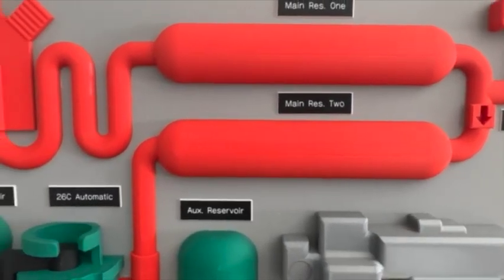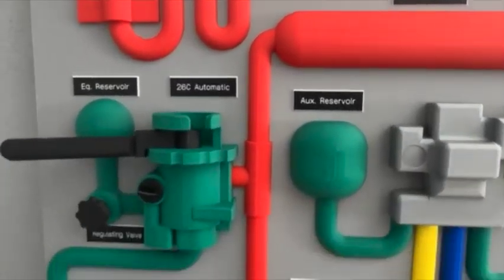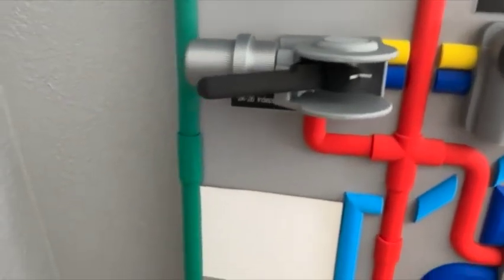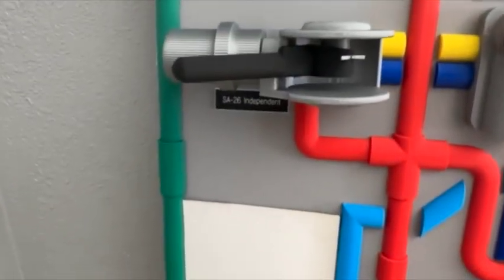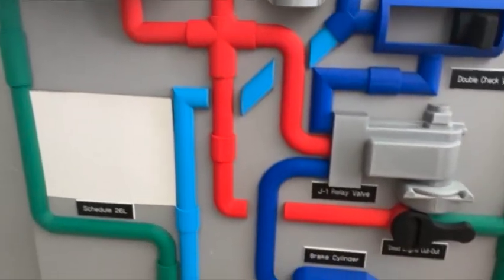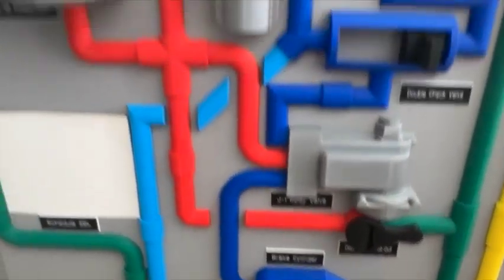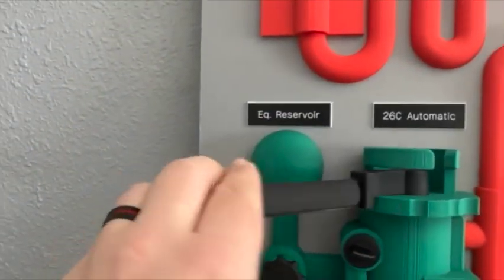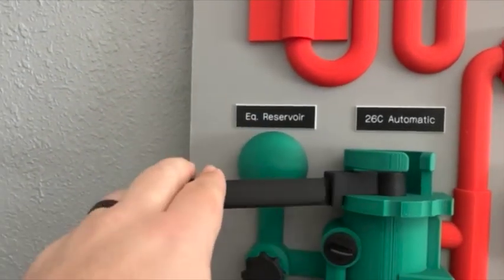Then that flows into main reservoir two. From main reservoir two, it flows out into the 26C automatic, the SA-26 independent, the J1, and to the dead engine. The automatic handle on the 26C does move, and you can talk about the different positions all the way from emergency to release.